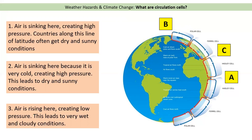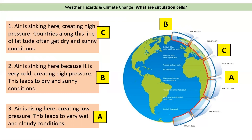Welcome back. The first answer is C: between the Ferrell and the Hadley cell the air is sinking, creating high pressure, so countries along the Tropic of Cancer get dry and sunny conditions. Number two is B — the North Pole — where cold air is sinking, also creating high pressure and dry, sunny conditions. And therefore the last one is A at the equator, where hot air rises, creating low pressure and leading to very wet and cloudy conditions.